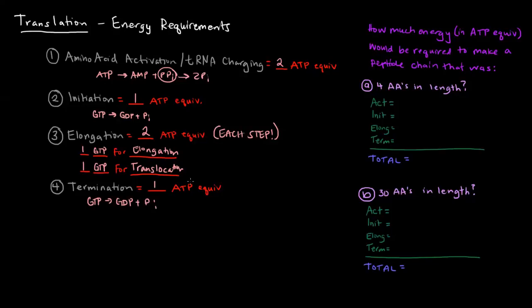So if we know this information, how can we use that to calculate the amount of energy it would cost to make a peptide chain? What if we wanted to make an amino acid chain of just four amino acids, a peptide chain made up of four amino acids, how much energy would that cost?